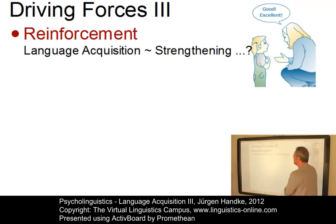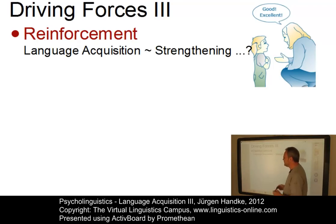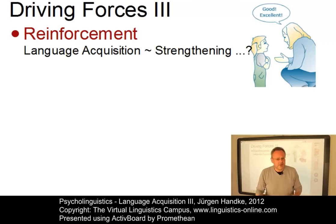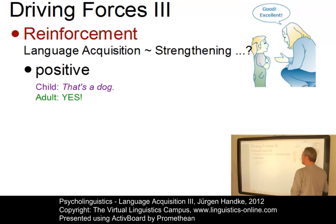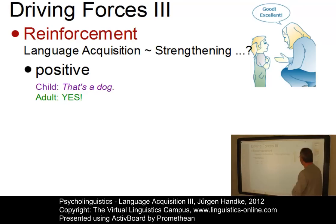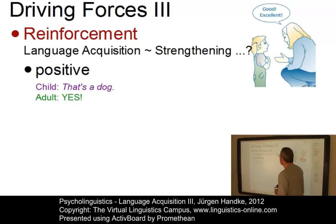Reinforcement is an important issue among the driving forces. This proposal suggests that language acquisition is basically a process of strengthening and shaping particular behaviors — namely, the child's utterances. There are two types of reinforcement. Positive reinforcement occurs when adults simply support correct utterances; so if the child says 'that's a dog' and this is correct, adults would respond with 'yes' to positively reinforce the child.